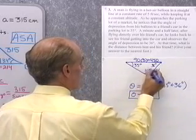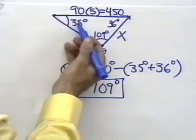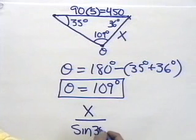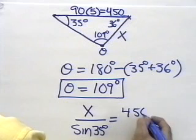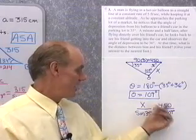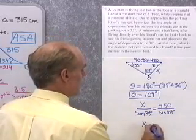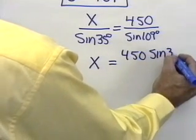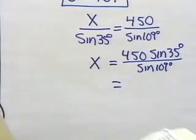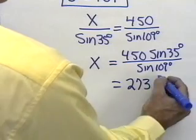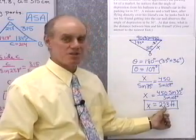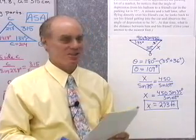Theta is 109 degrees. Now I'll set up the Law of Sines: x is to sine of 35 as 450 is to sine of 109 degrees. Multiplying both sides by sine 35, x equals 450 times sine 35 degrees, all divided by sine 109 degrees. Working that on a calculator, that comes out to be 273 feet. So the distance from him to his friend is 273 feet.